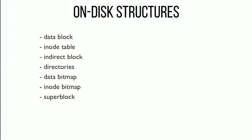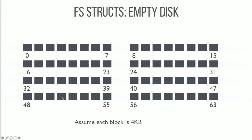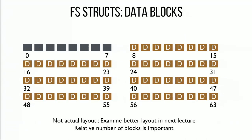Now let's get into the details of what's actually in each of those data structures: data blocks, inodes, indirect blocks, directories, data bitmaps, inode bitmaps, and the super block. We view our disk as a linear array of blocks. We want most of the disk devoted to data blocks — that's what users care about. In today's lecture we'll keep it simple; on Thursday we'll look at where to put data blocks relative to all other metadata to get better performance.